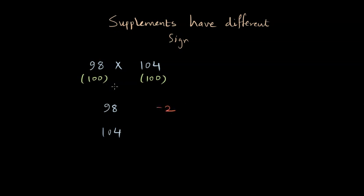minus 2, since it's 98 minus 100, and the supplement of 104 is plus 4. Now how can we perform this multiplication? Note that 98 and 104 are on the left-hand side, minus 2 and plus 4 are on the right-hand side. Let's quickly draw the horizontal line and now we are ready to find out the multiplication.